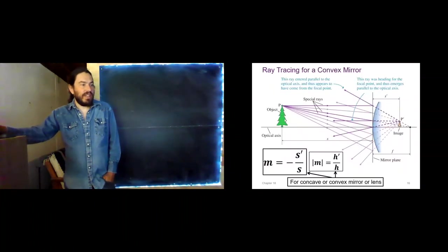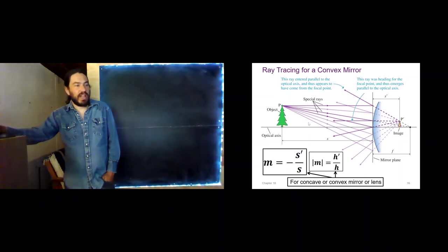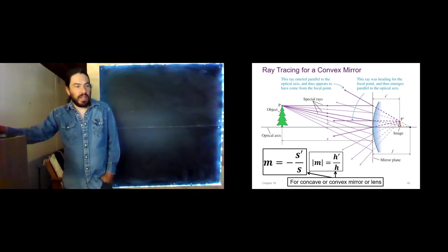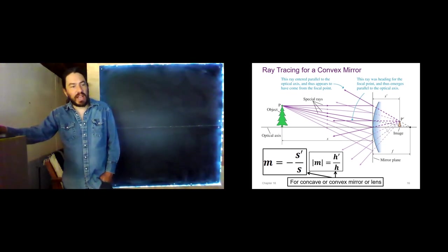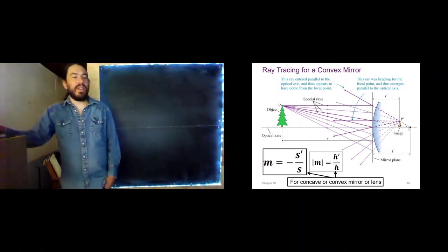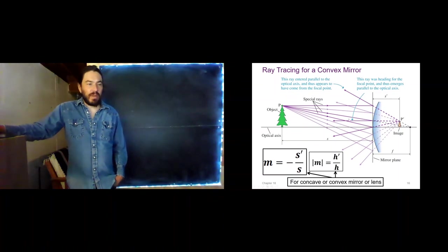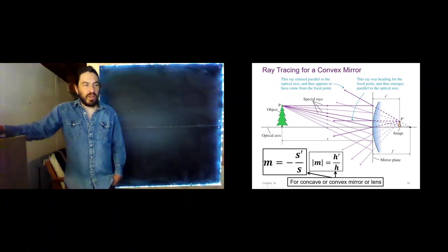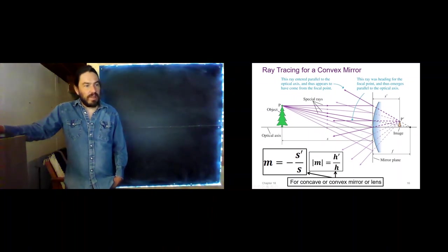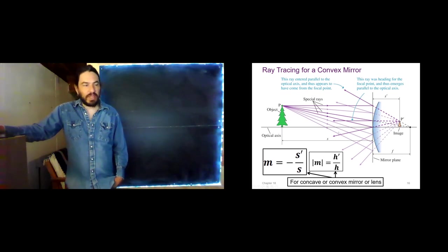Here's our drawing of the rays coming off this object — seven rays, including our three special ones. One comes in parallel, one emerges parallel, and one bounces off the center with angle of incidence equal to angle of reflection. This is actually tricky because no ray ever actually goes through the focal point of a diverging mirror. So we always remember that they must appear to come from the focal point. For the second ray, if it's going to emerge parallel to the optical axis, it has to head as if going toward the far focal point before bouncing off parallel.